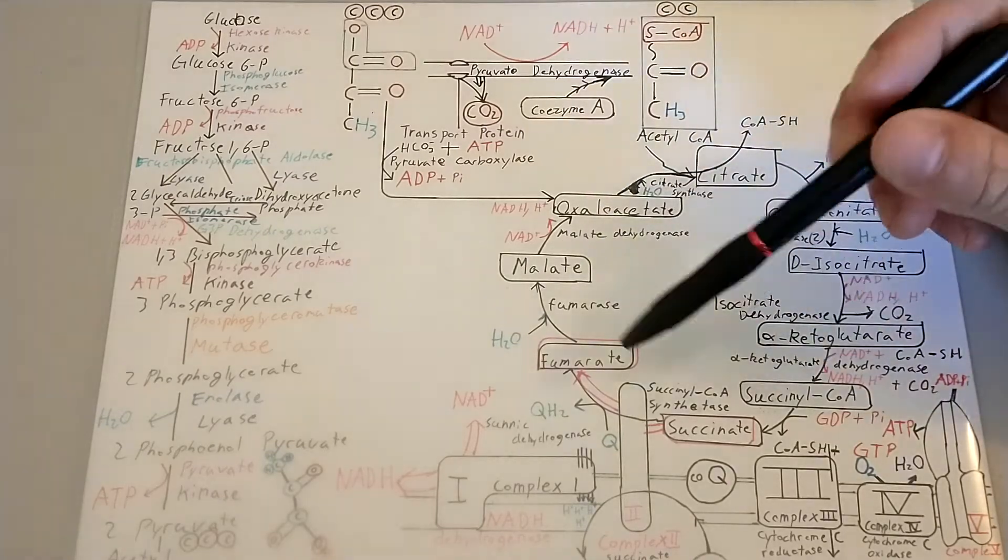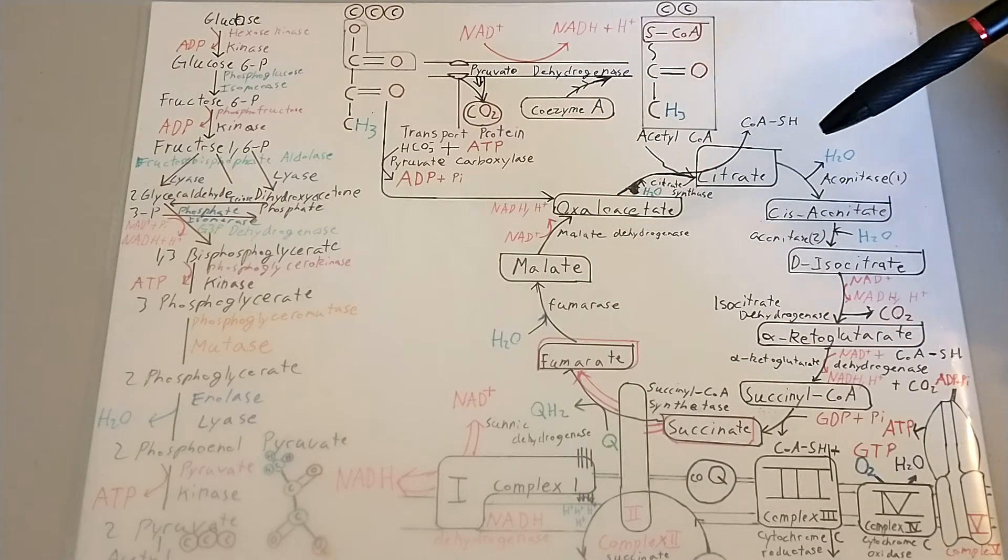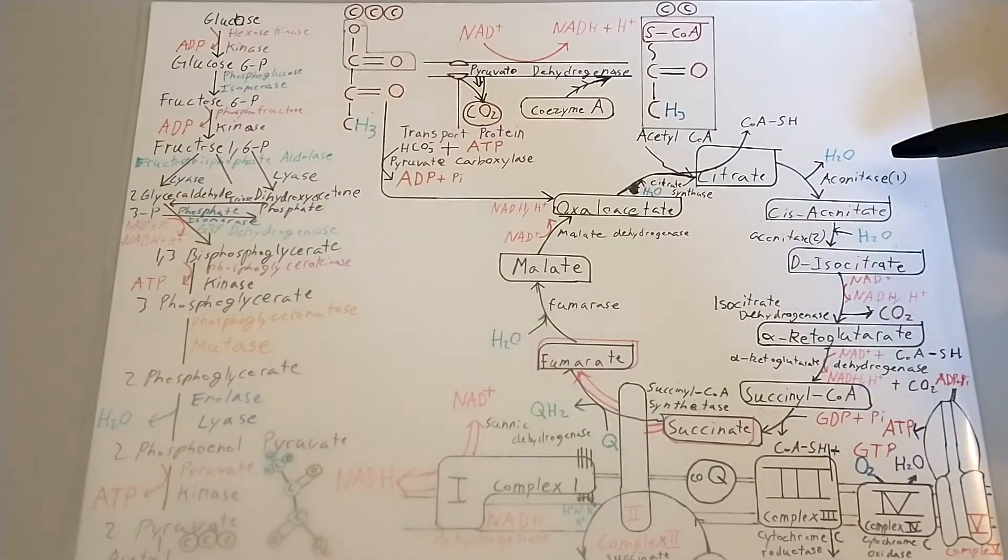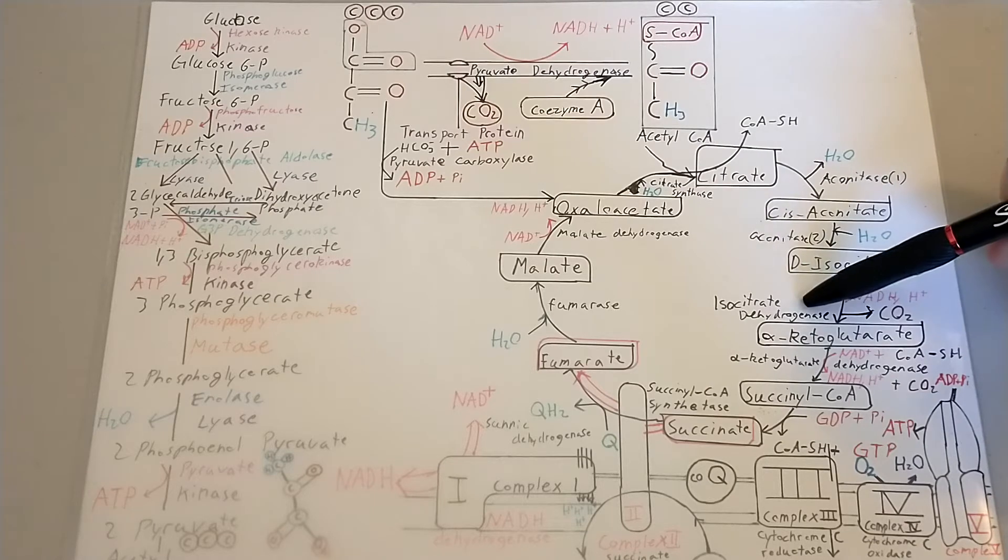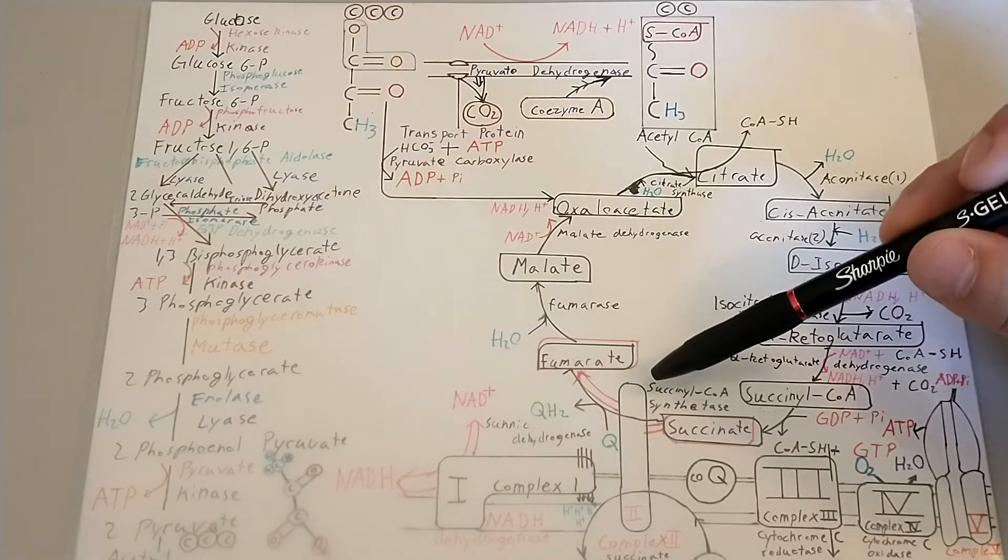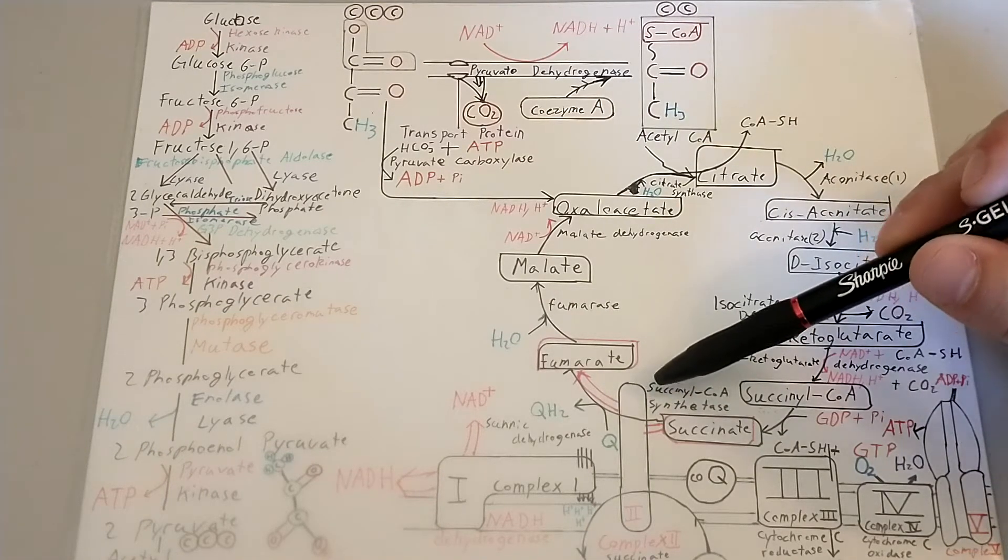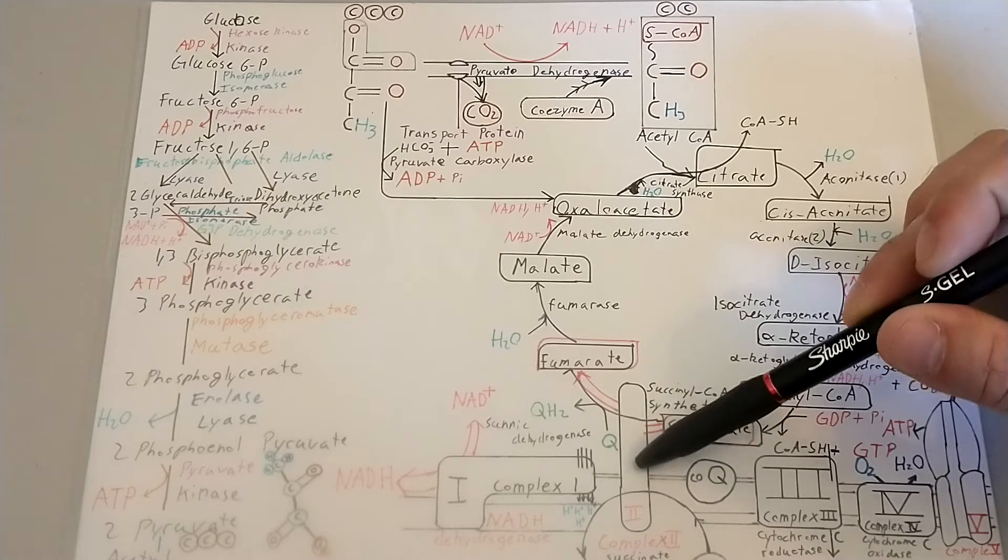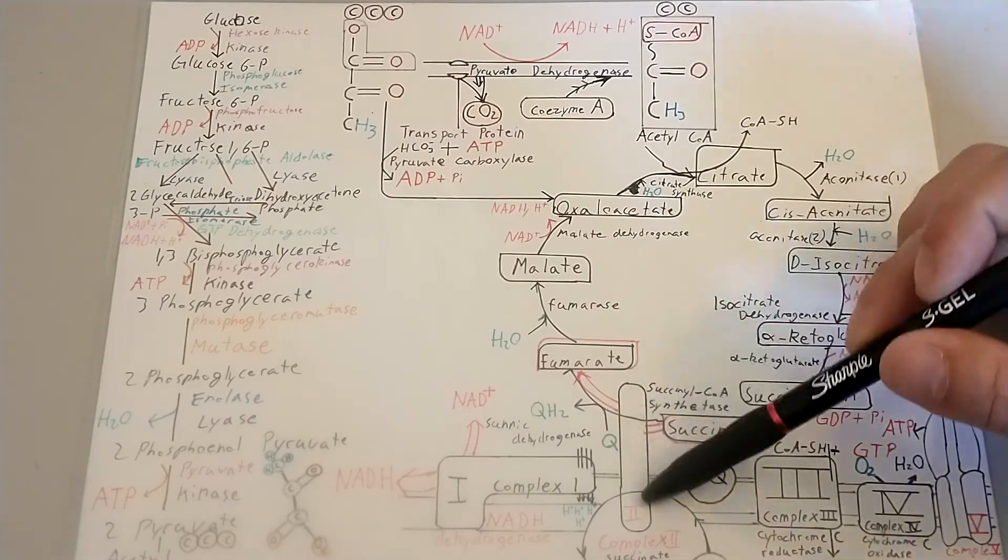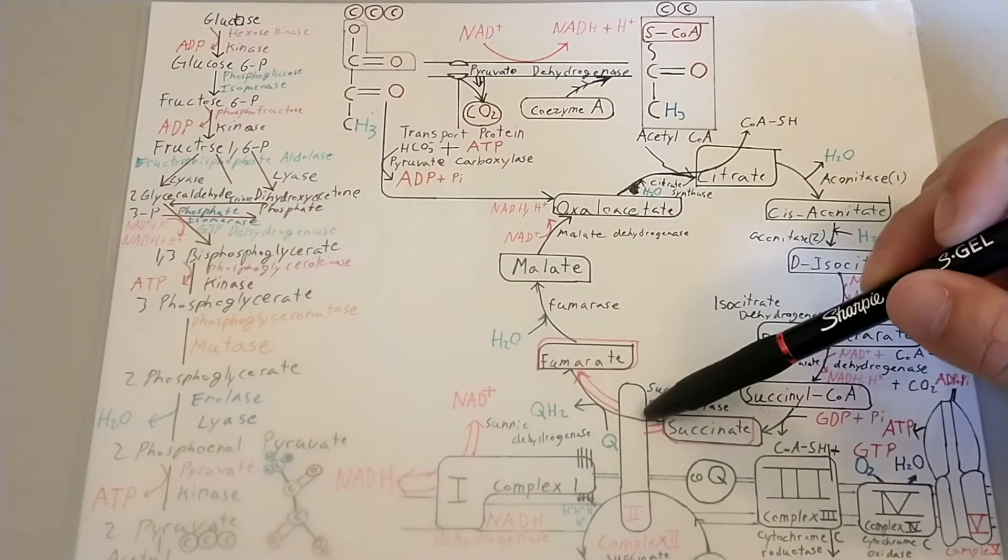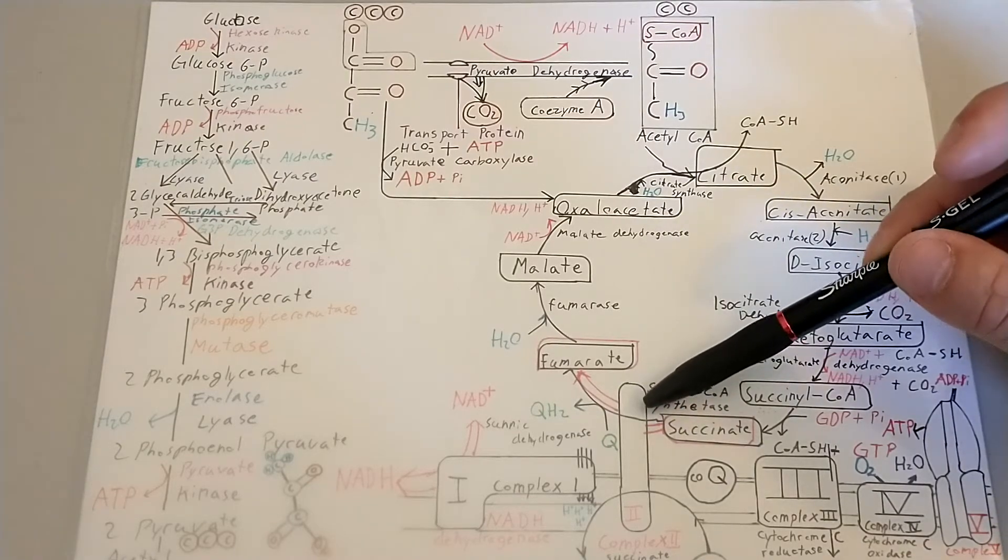This right here is called the Krebs cycle, TCA cycle, tricarboxylic acid cycle as well. These are the enzymes: aconitase, aconitase-2, isocitrate, alpha-ketoglutarate. I really want you guys to know this one right here, and this one's going to be called the enzyme succinate dehydrogenase, which is the Complex 2 enzyme. I think it's really important you guys know this because this enzyme is attached to the electron transport chain as well, and also in the Krebs cycle. Big bonuses, big key parts to understand this.